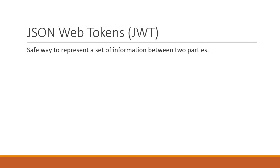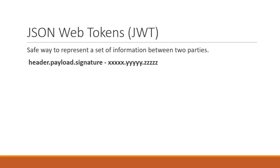The token is composed of a header, a payload, and a signature. So a JWT is just a string with the following format: header.payload.signature.